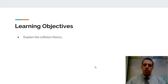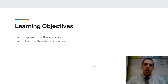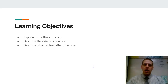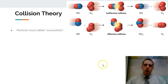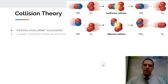We're going to start by explaining what's called the collision theory. This is our model for understanding how reactions work, and then describe the rate of reaction, what affects the rate of reaction, and go through all the different things that affect that rate. In order for a reaction to occur, particles must physically collide with each other, and they have to collide successfully.